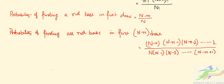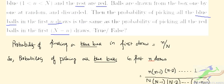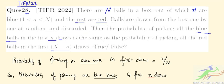Simplifying this, the numerator gives (N minus n) factorial and the denominator gives N factorial divided by n factorial. So this comes out to (N minus n) factorial times n factorial divided by N factorial. This is the same as the probability for blue balls, confirming this is a true statement. So the answer is true.